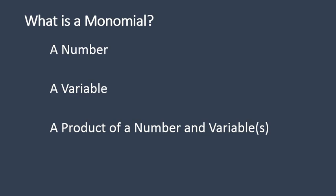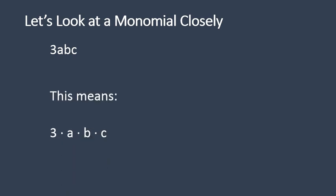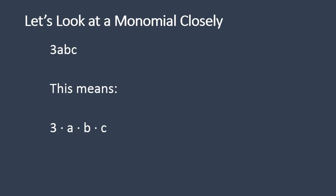First off, we have to remember what is a monomial. A monomial is a number, a variable, or a product of a number and variables. That seems kind of complicated, so let's look at some examples. Here's a monomial: 3abc. This means 3 times a times b times c, so it is the product of a number and variables — it's all multiplication. A term like this that comprises a number, a variable, or a series of variables is all considered one term, and that is a monomial.